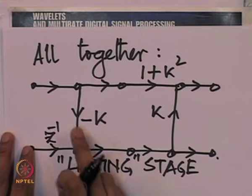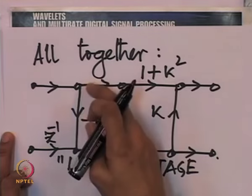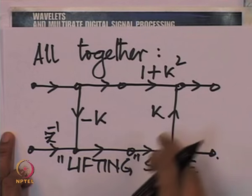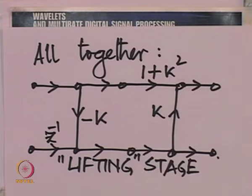In the literature, people have talked about lifting implementations — lifting one step at a time. What we have in this structure is essentially two lifting stages. The first time, you lift by combining the upper with the lower to modify the lower. In the second step, we combine the lower with the upper to modify the upper, and by alternate improvements — lifting of the lower and then the upper — we improve the quality of the wavelet transform step by step.